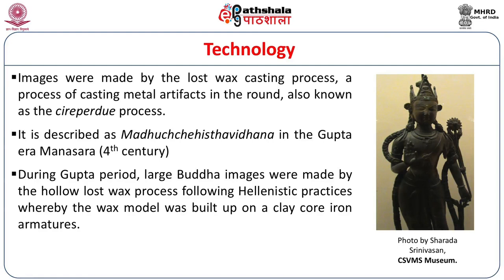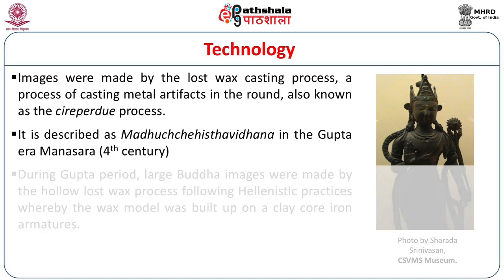Looking at some interesting aspects of technology, during the Gupta period the large Buddha images were made by the hollow lost wax process, which typically follows Hellenistic practices whereby a wax model was built up on a clay core held up with iron armatures that followed the progression of the limbs. A thin layer of wax was added onto the clay core so that when the mold was formed by investing it with numerous layers of clay and the wax was melted out, a thin layer of metal formed on top of the clay core — and often the clay core is left intact inside the sculpture.